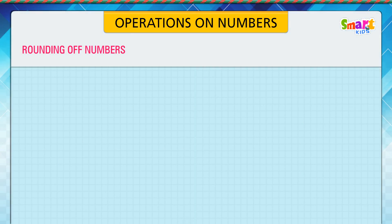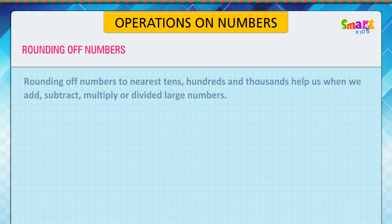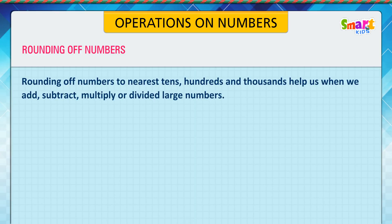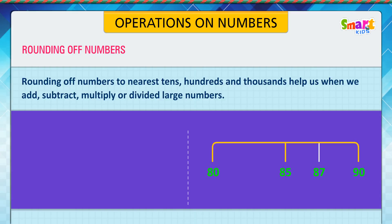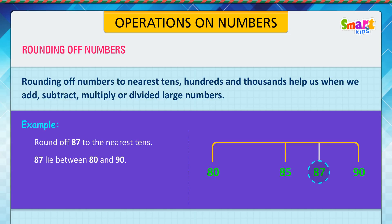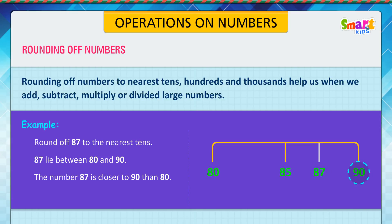Rounding off numbers. Let us learn how to round off numbers. Rounding off numbers to the nearest tens, hundreds, and thousands helps us when we add, subtract, multiply, or divide large numbers. For example, round off 87 to the nearest tens. 87 lies between 80 and 90. The number 87 is closer to 90 than 80. Therefore, we round off 87 to 90.